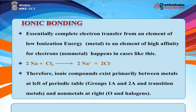Ionic bonds can typically be broken through hydrogenation, or the addition of water to a compound. Essentially, complete electron transfer occurs from an element of low ionization energy (metal) to an element of high affinity for electrons (non-metal), as in: 2Na + Cl₂ → 2Na⁺ + 2Cl⁻. Ionic compounds exist primarily between metals at the left of the periodic table, groups 1A and 2A and transition metals, and non-metals at the right, such as O and halogens.